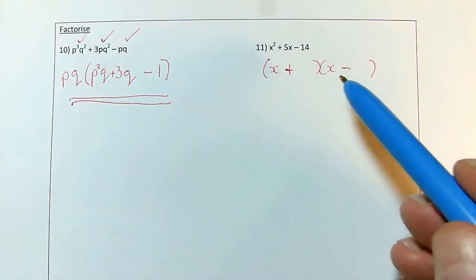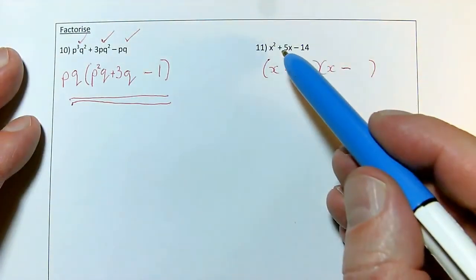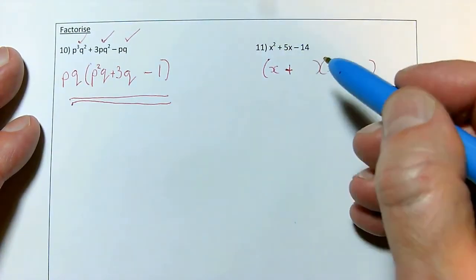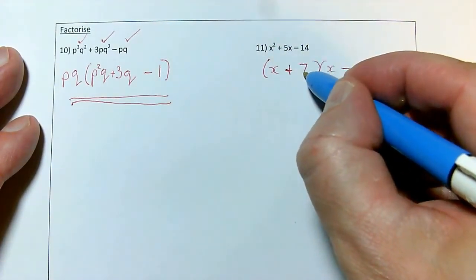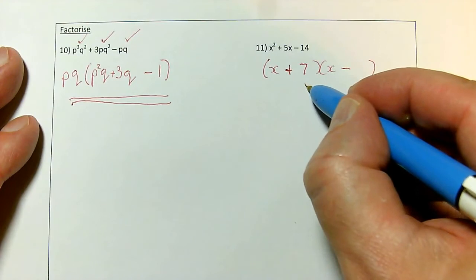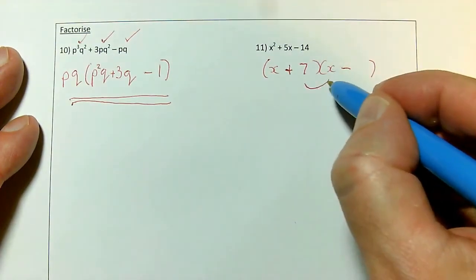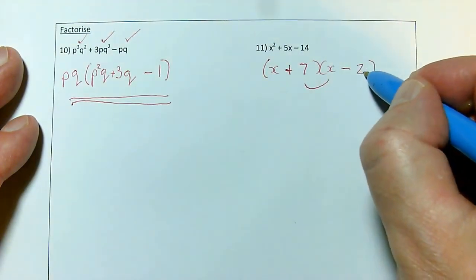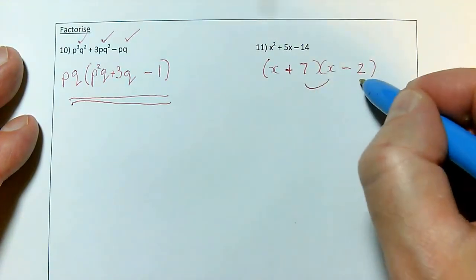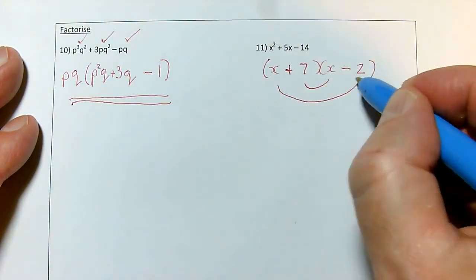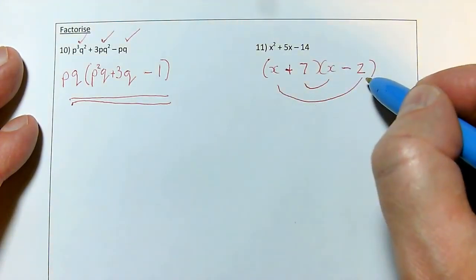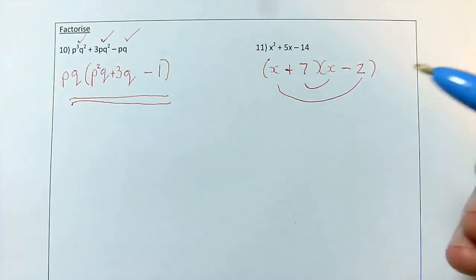So which is going to be the plus, and which is going to be the minus? Well, to end up with plus 5, I need a plus 7 here, because that's going to give me 7 times x is plus 7x. And if I put the minus 2 there, minus 2x, 7x take away 2x does equal 5x. So I've kind of checked it.